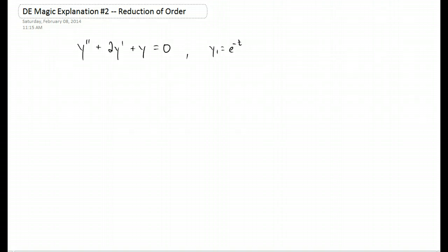Alright, in the last video we solved this repeated root second order differential equation here and we proved why we could just take our linearly independent solution and multiply it by t to get a second linearly independent solution. Well, I'm going to show you another way to figure that out using a technique that's actually pretty good and we're going to use it for other things called reduction of order.